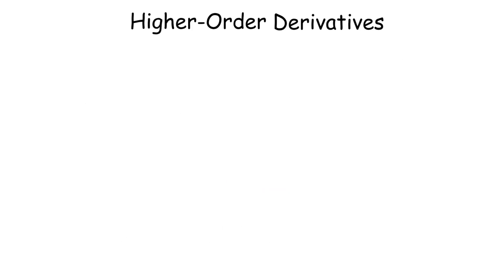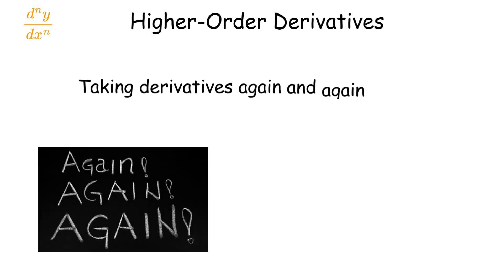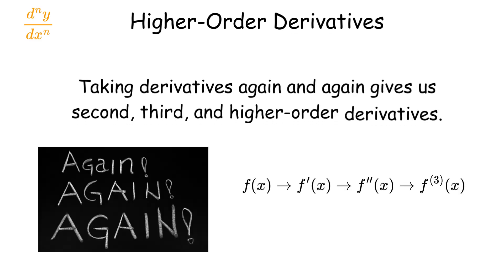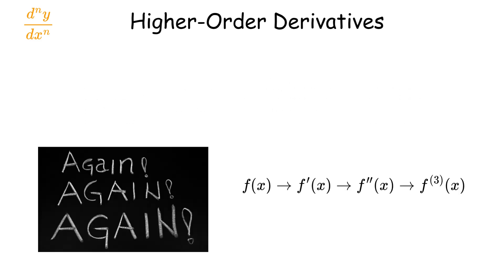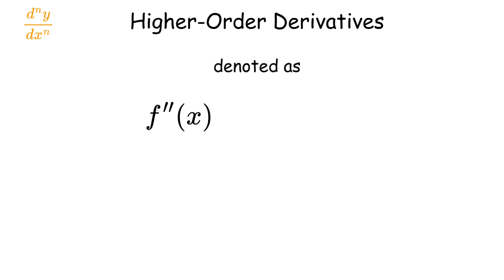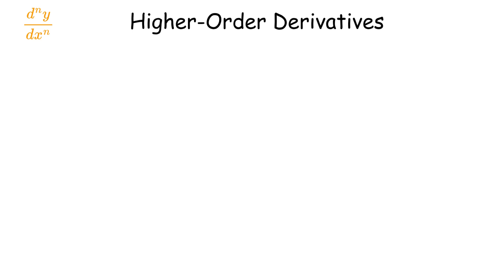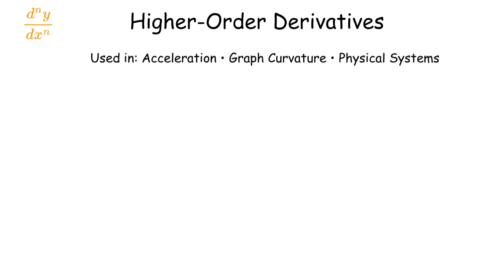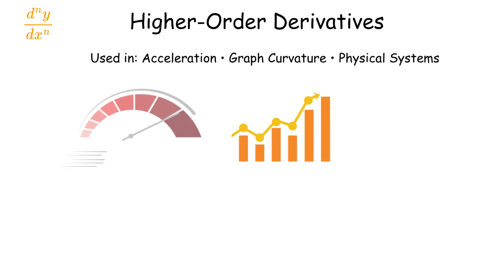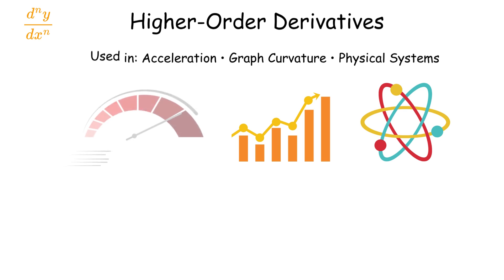Higher order derivatives are derivatives taken multiple times. The second derivative, denoted as f double prime of x, or d squared y over dx squared, measures how the rate of change itself changes. These are useful in analyzing acceleration, concavity of graphs, and physical systems.